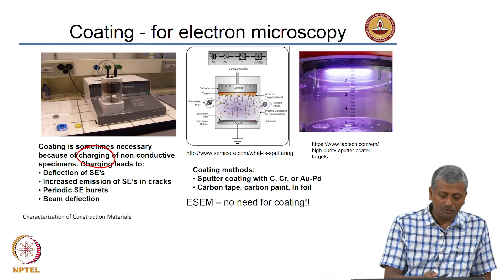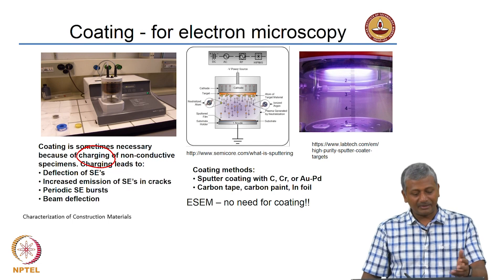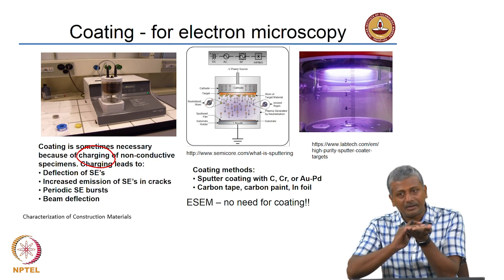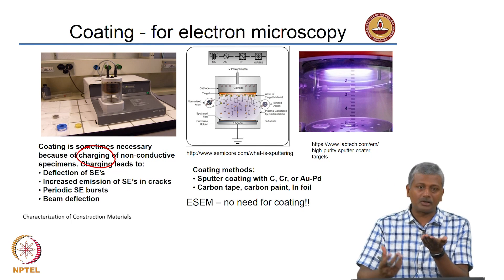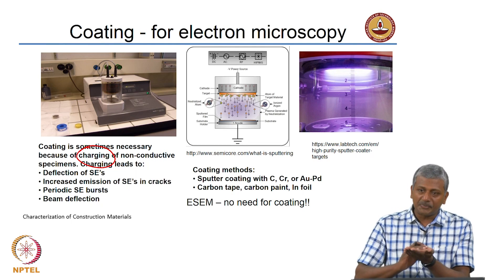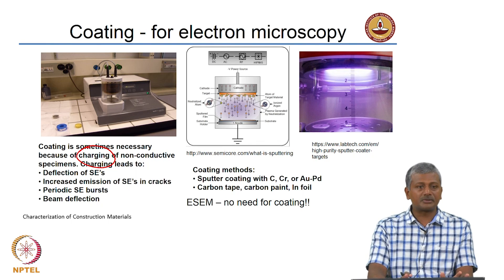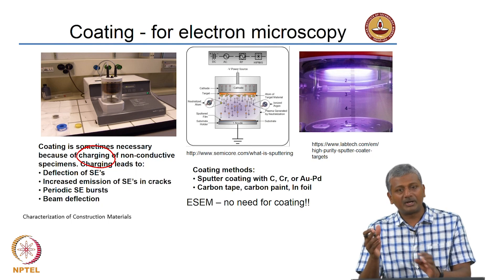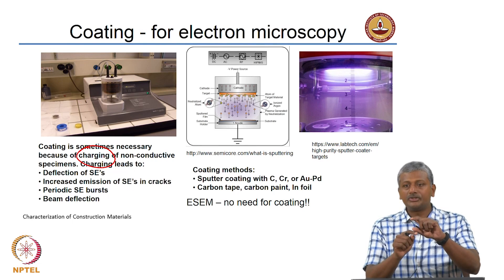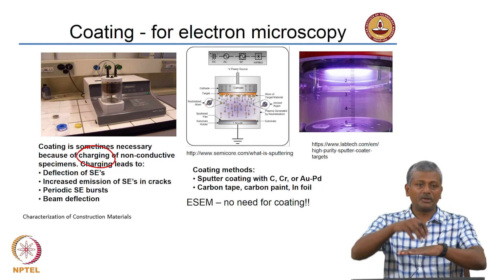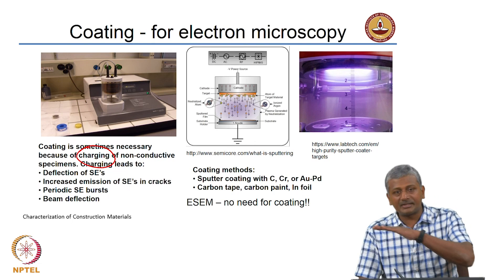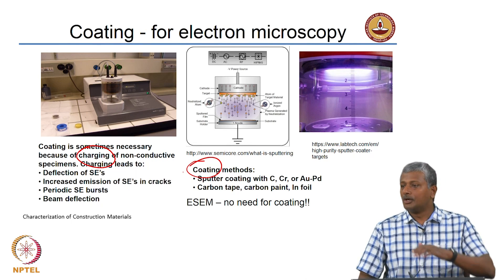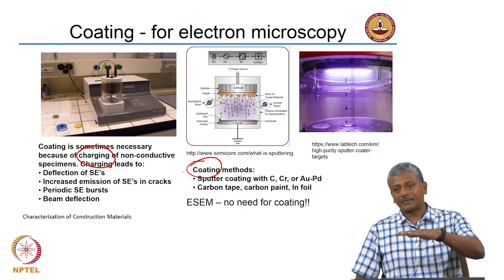Charging causes the resulting image to appear completely white and leads to other problems such as deflection of secondary electrons and beam deflection. To avoid this, we need to make the surface of the non-conductive material conductive. So if you are dealing with asphalt concrete or cement concrete and want to image it in the scanning electron microscope, you need to make the surface conductive. This problem does not arise with light, since any material will reflect or transmit light depending on its opacity.